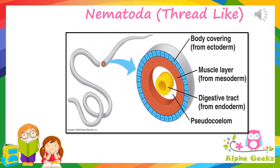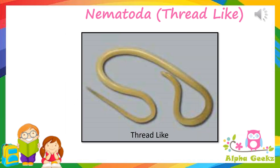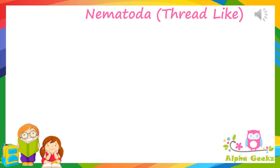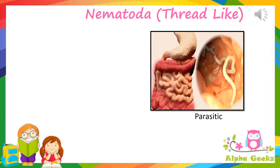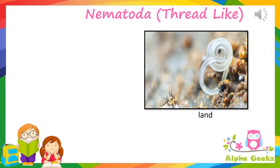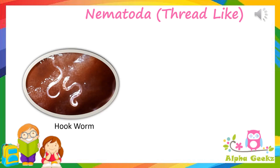Nematoda: nematodes are invertebrates that are round with a pseudo body cavity. They are bilaterally symmetrical and have elongated, unsegmented, thin hair-like bodies. That is why they are named nematodes, which means 'thread' in Greek. They are known as roundworms. They are free-living or live as parasites and inhabit every habitat including water and land. Examples of nematodes are hookworms and pinworms.